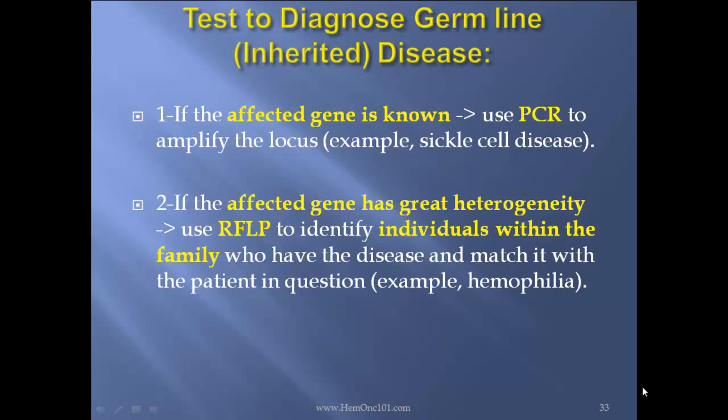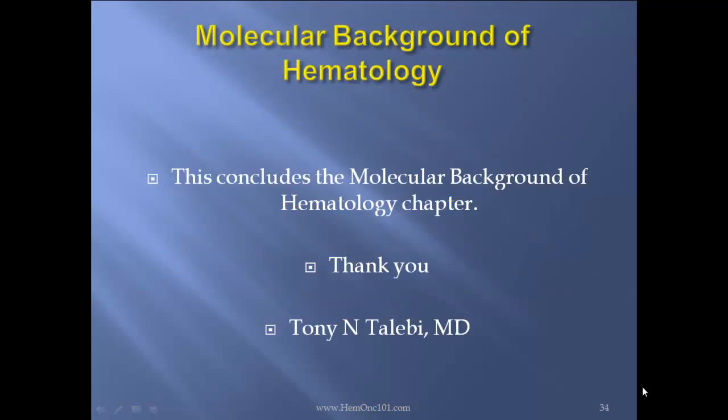Tests to diagnose germline inherited diseases: if the affected gene is known, just use PCR to amplify the locus — for instance, sickle cell disease. If the affected gene has great heterogeneity, use RFLP to identify individuals within the family who have the disease and match it with the patient in question — for instance, in hemophilia. This concludes the molecular background of hematology section. Thank you.